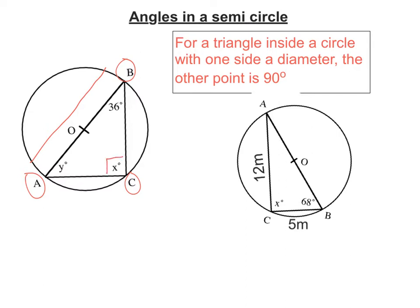So we just need to know in an exam that that will be a right angle. So to work out angle Y then is going to be 180 minus 90, where X is because we know that's a right angle, minus 36. And if I do that, I'm going to get 54 degrees.